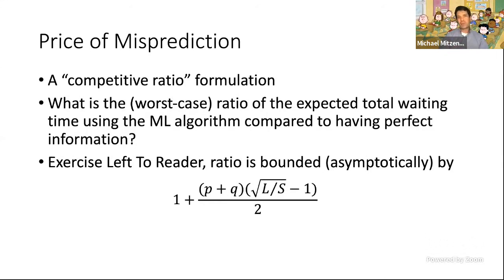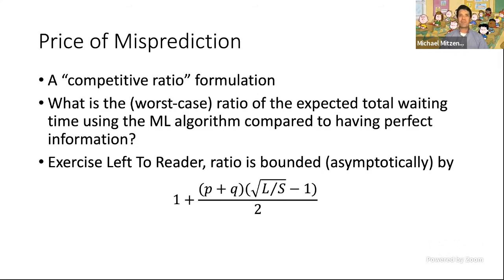The price of misprediction is the worst-case ratio of expected total waiting time using the machine learning algorithm compared to having perfect information. Even for any algorithm, you can ask what the cost is for imperfect versus perfect information. The result says this depends in a nicely linear fashion on the total error P plus Q.